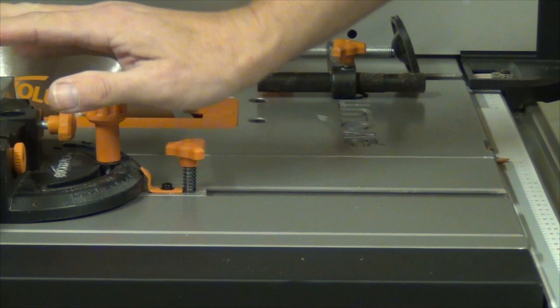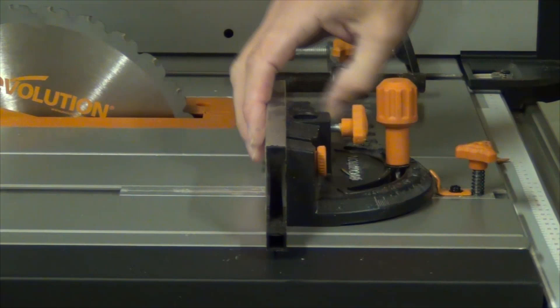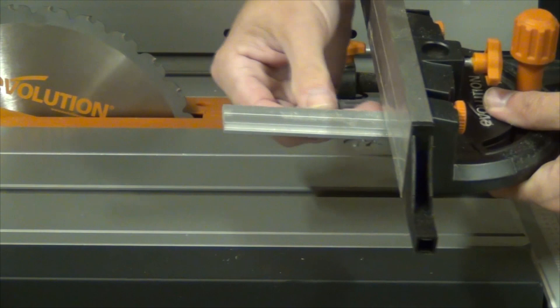The miter fence slides really easily in the miter slots, but there is a little bit of slop on there. But I do think the use of a centre punch along the bar will soon take that slop out.